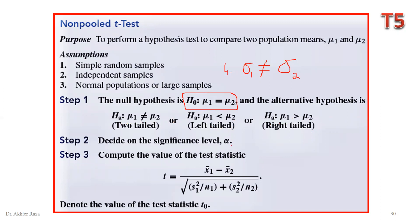Step 2 involves alpha, the level of significance. In step 3, we have the formula for the non-pool t-test, which is exactly the same as the z-test formula, except it has sample variances in the denominator instead of population standard deviations. Since the null hypothesis states the difference of two means is zero, mu 1 minus mean 2 drops out, giving us the reduced formula.